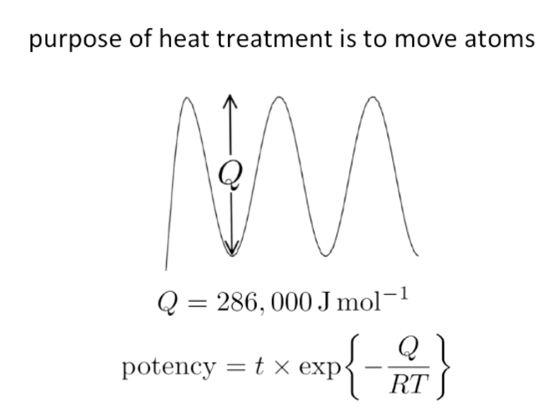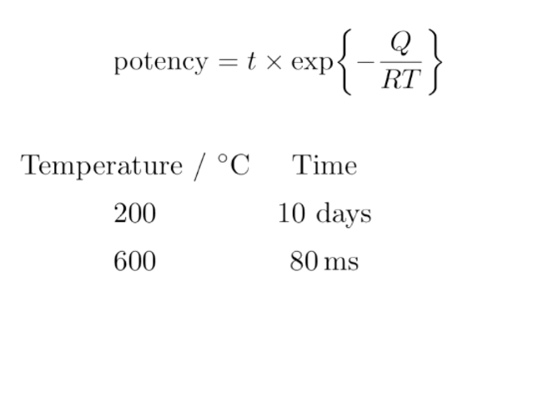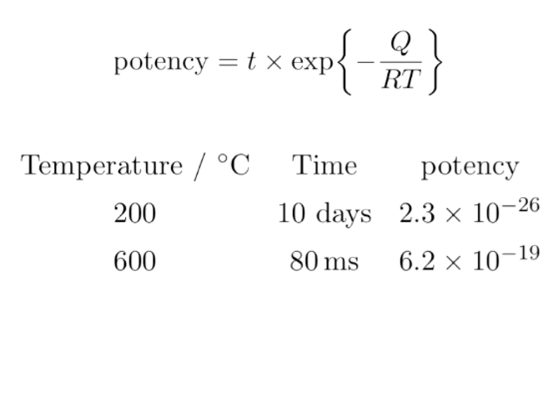Going back to my introduction: 80 milliseconds and 10 days. Suppose we are transforming at 600°C for 80 milliseconds, and at 200°C for 10 days. Which is the more powerful heat treatment? Is it the one lasting 10 days, or the one lasting 80 milliseconds? Here are some calculations: 200°C for 10 days versus 600°C for 80 milliseconds — and you can see that the latter is orders of magnitude more powerful.